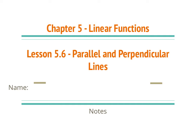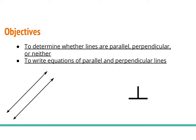Okay, this is Chapter 5, Lesson 5.6: Parallel and Perpendicular Lines. Go ahead and put your name and let's get started. Our objectives are to determine whether lines are parallel, perpendicular, or neither, and to write equations of parallel and perpendicular lines. Parallel lines are lines that are going in the same direction — they will never intersect each other. These lines are basically the same line just shifted, and they're never going to intersect because they go on forever. What's unique about parallel lines is they have the same slope.